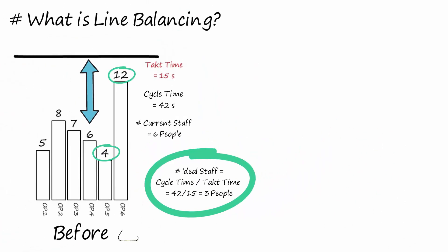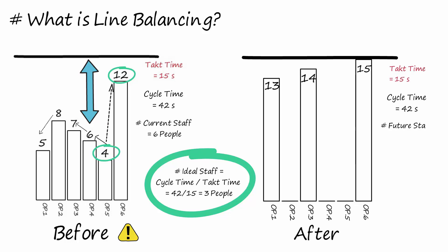Because of this difference between the current process and the theoretical staff, it is possible to run a Kaizen event to balance work content between stations, and combine the working activities between stations to go from 6 operators to 3 operators.